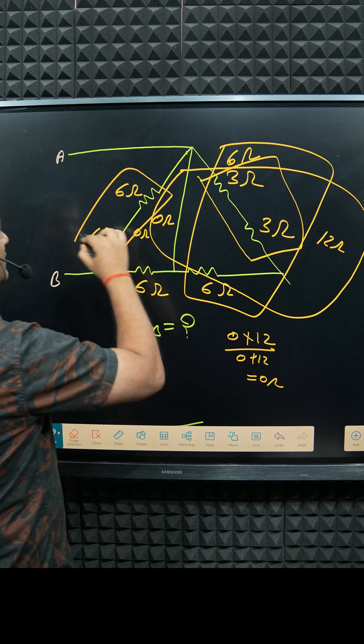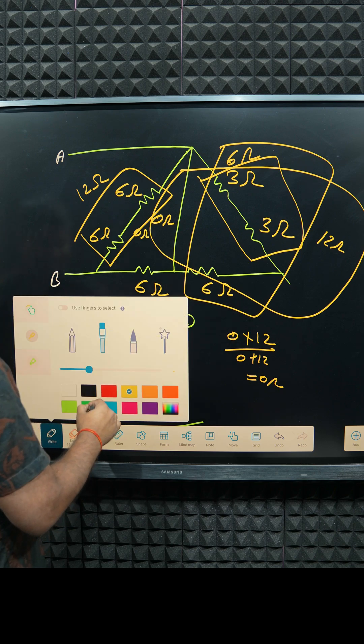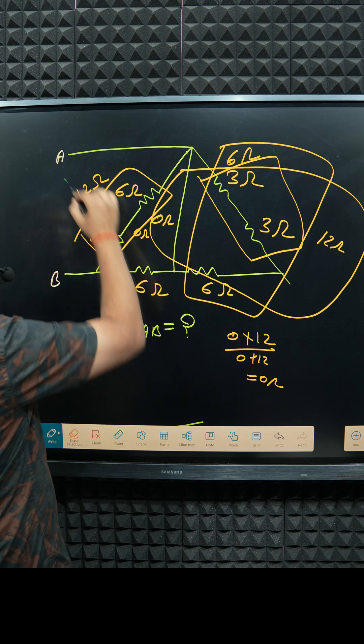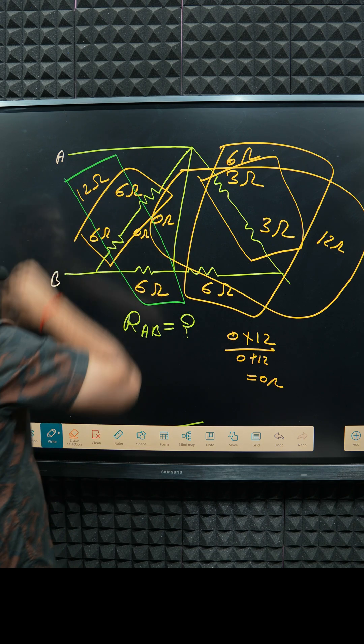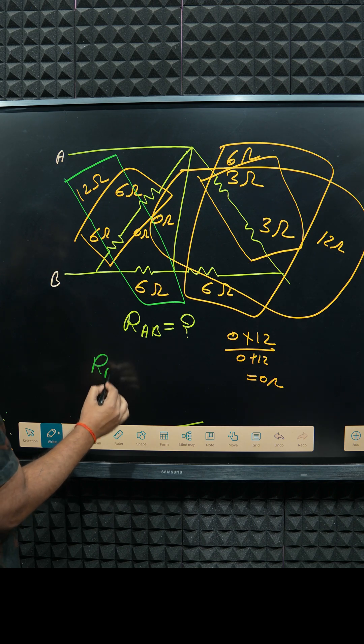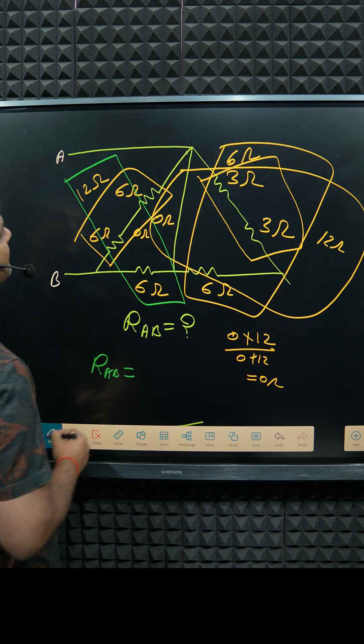And 6 and 12, both are in parallel. So R of AB, basically how much? 12 into 6 divided by how much? 18.